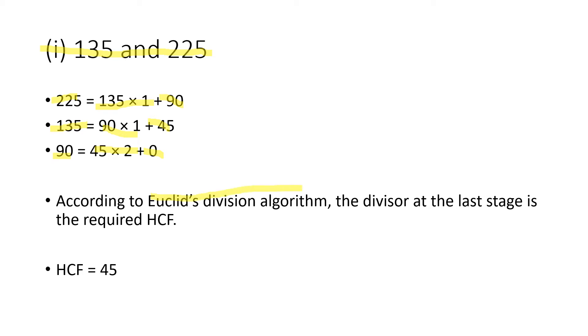According to Euclid's division algorithm, the divisor at the last stage where you get the remainder as 0 is the required HCF. So the HCF is 45.